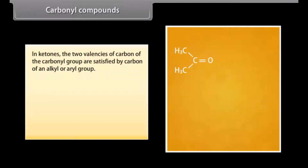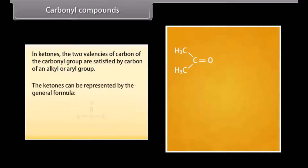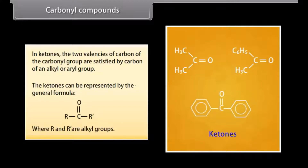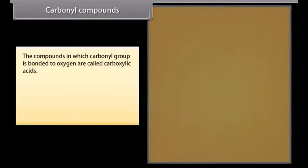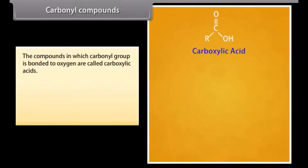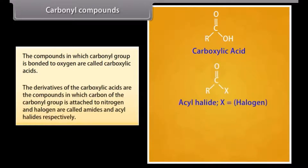In ketones, the two valencies of carbon of the carbonyl group are satisfied by carbon of an alkyl or aryl group. Ketones can be represented by the general formula R–C(=O)–R', where R and R' are alkyl groups. The compounds in which the carbonyl group is bonded to oxygen are called carboxylic acids. The derivatives of carboxylic acids in which carbon of the carbonyl group is attached to nitrogen and halogen are called amides and acyl halides respectively.